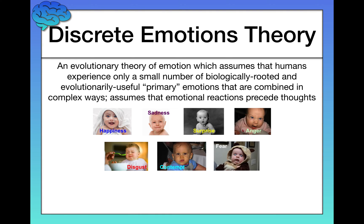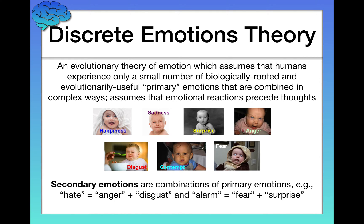These are primary emotions, but you can combine them in complex ways to produce a variety of secondary emotions — because obviously we as humans experience more than just seven emotions. For example, hatred is a combination of anger and disgust targeted at an individual. If you feel alarmed, that's a combination of the primary emotions of fear and surprise. Through these combinations, according to the theory, you get all of the other emotions we experience.